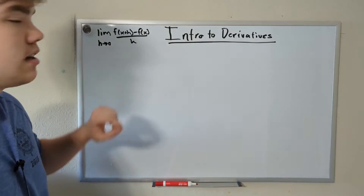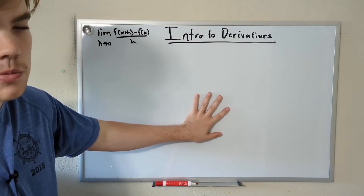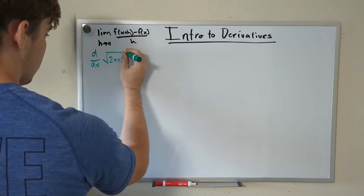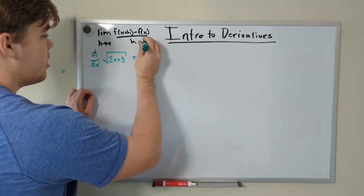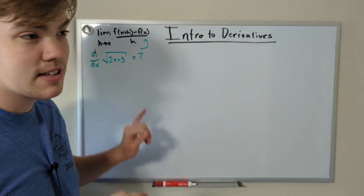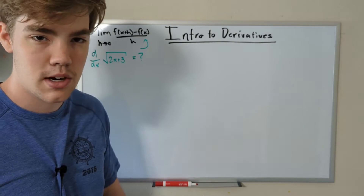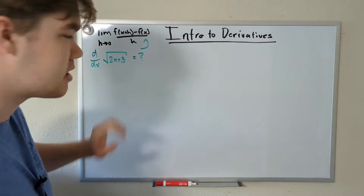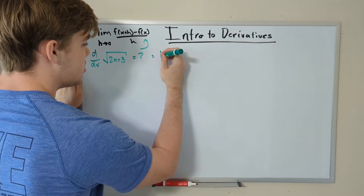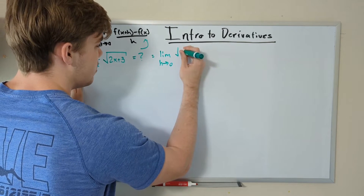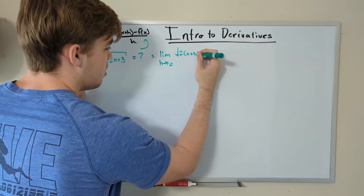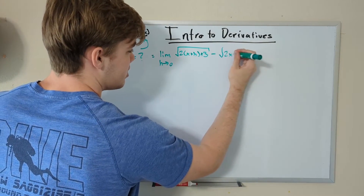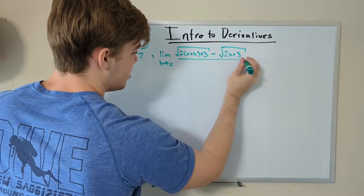Let's find the derivative of the square root of 2x plus 3. We're going to plug this into our derivative definition. We have to replace every x within our function with x plus h. So this becomes the limit as h approaches 0 of the square root of 2(x+h)+3, minus f(x) which is the square root of 2x+3, all divided by h.